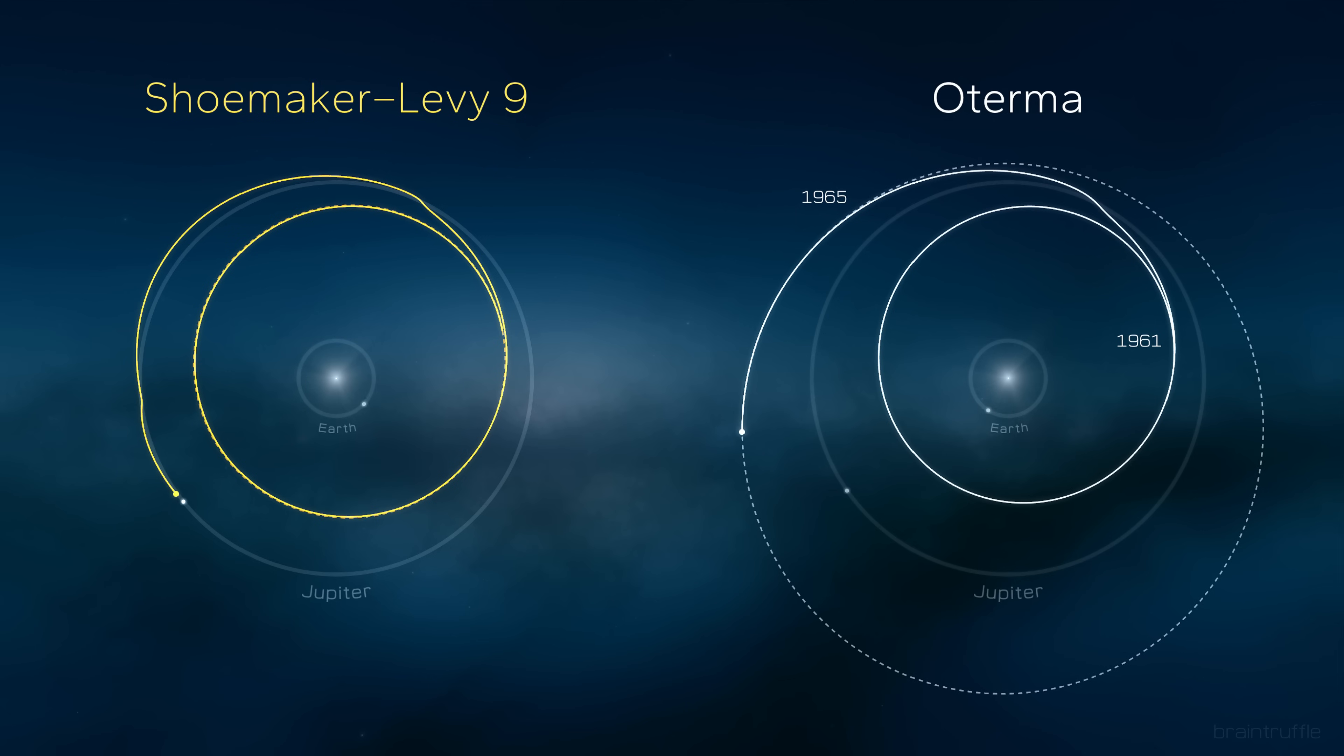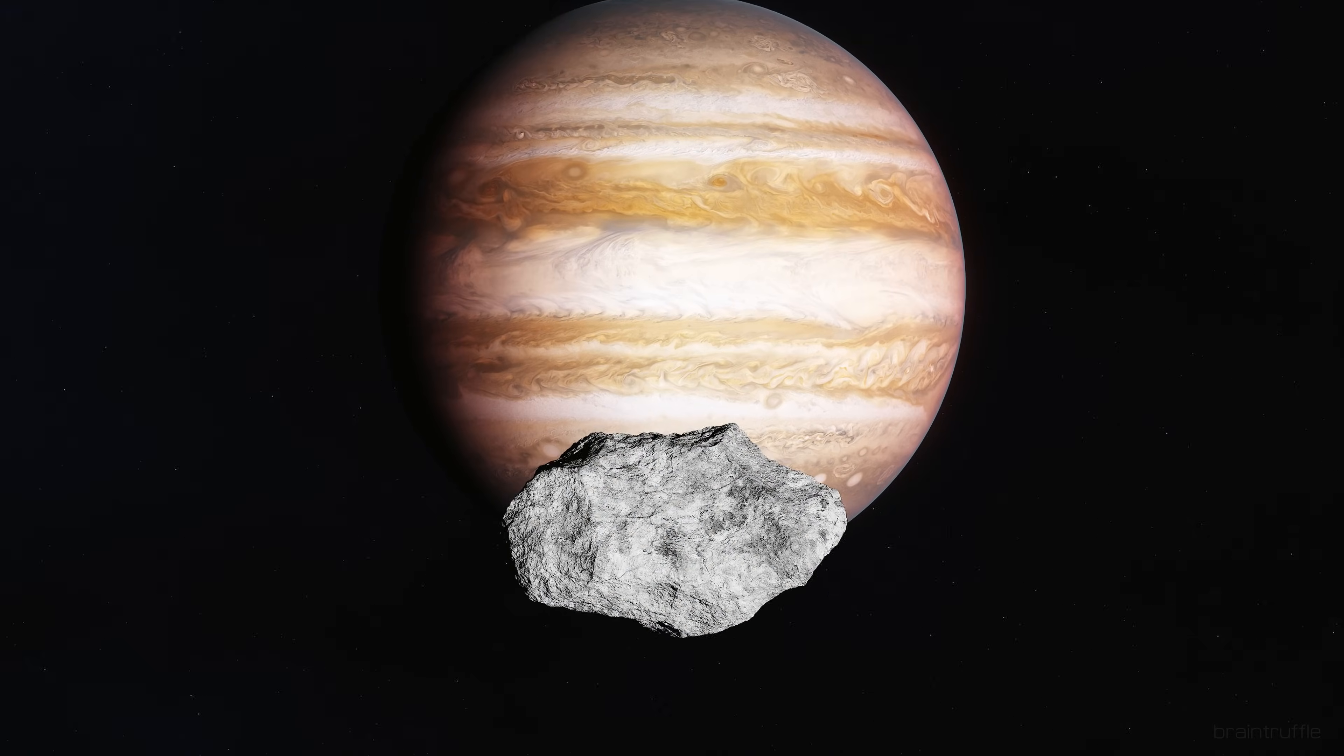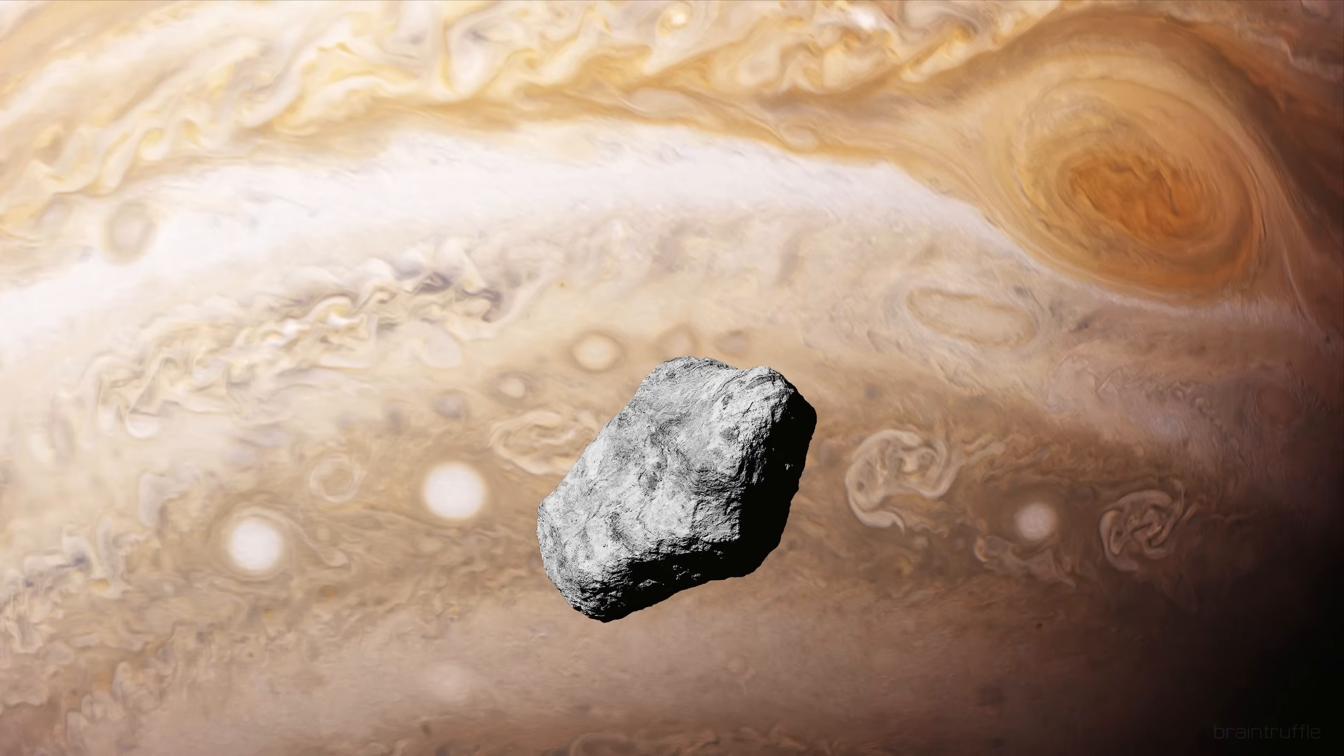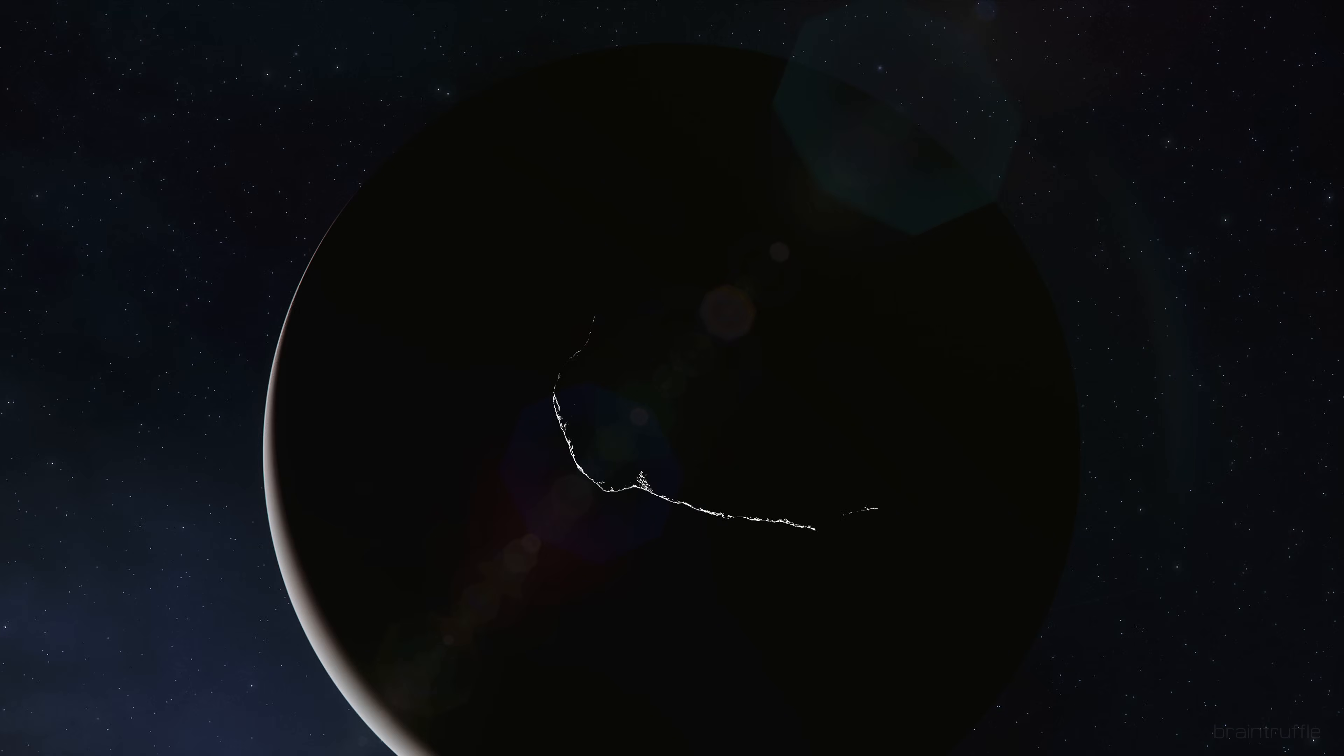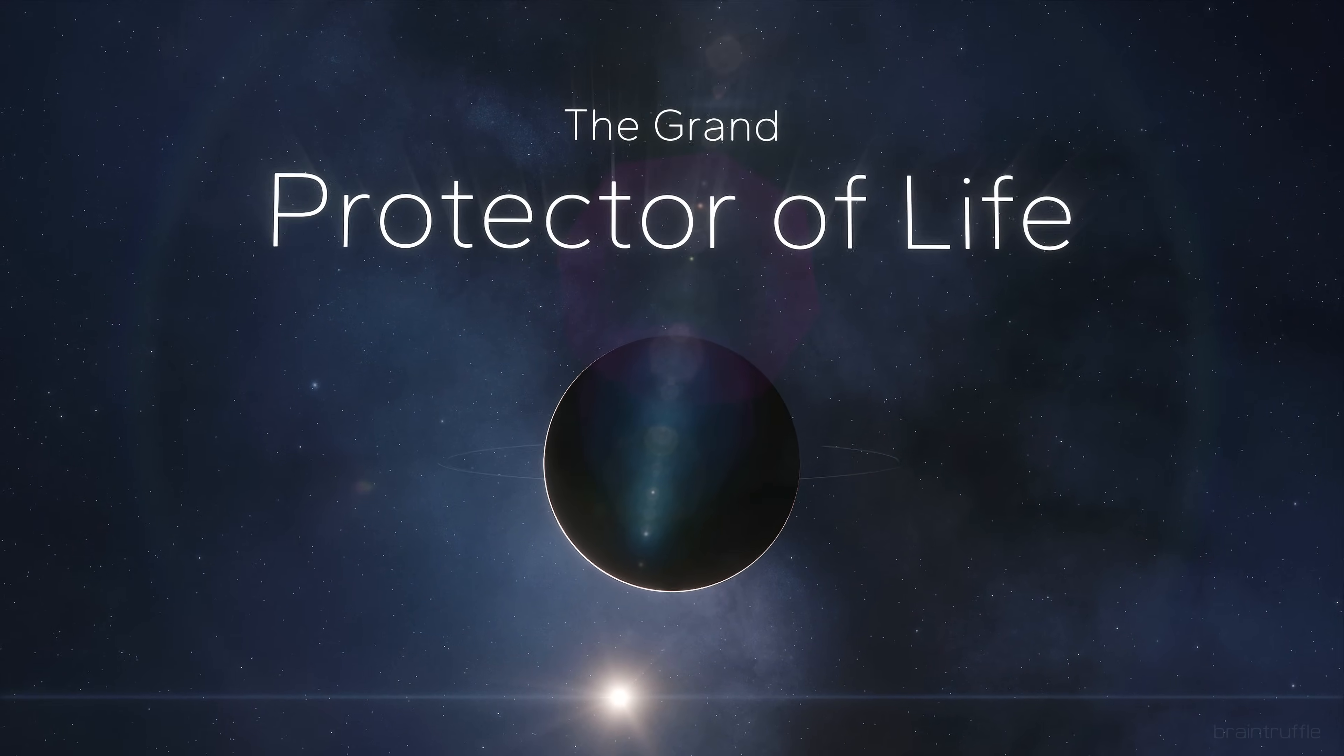And while both comets never threatened the Earth, scientists began scrutinizing Jupiter's role as the vacuum cleaner of the inner solar system. But they were right being skeptical. When a giant planet changes comet orbits like it's nothing, what's the chance it works in our favor? And if Jupiter helped, was it about preventing Earth impacts?